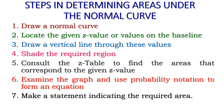Here are the steps in determining areas under the normal curve. First, draw a normal curve. Then locate the given z-value or values on the baseline. Draw a vertical line through these values. After that, shade the region. Then consult the z-table. Examine the graph and use probability notation to form an equation. Finally, make a statement indicating the required area. These are the seven steps to remember.